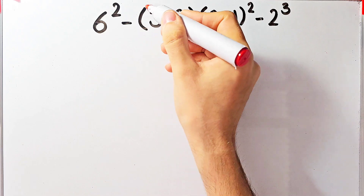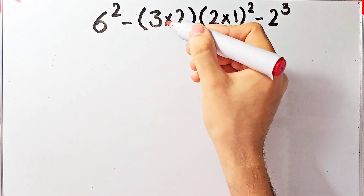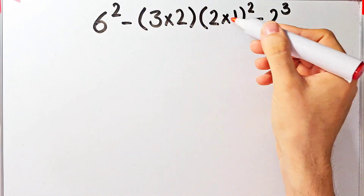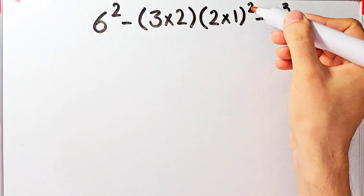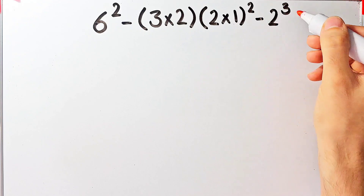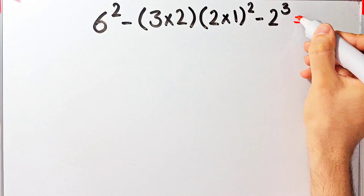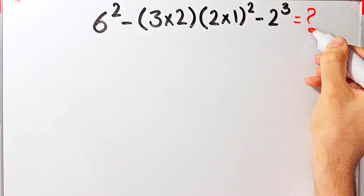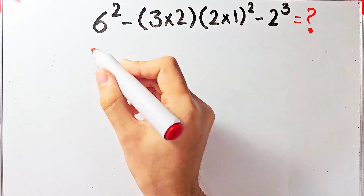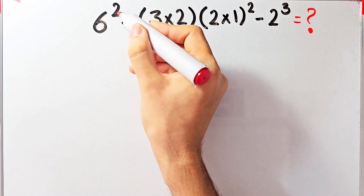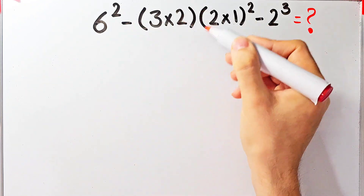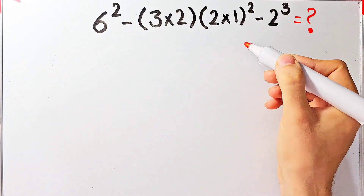Let's solve this question step by step together. The question is: 6 to the power of 2, minus 3 times 2, then times 2 times 1 to the power of 2, minus 2 to the power of 3. In this question we have exponents, subtraction, parentheses, and multiplication.